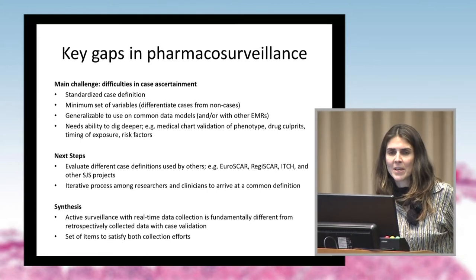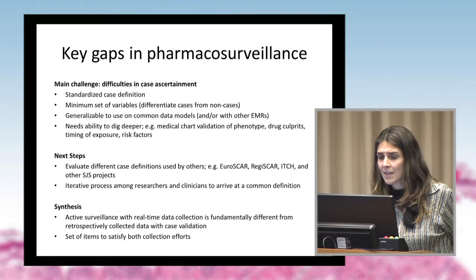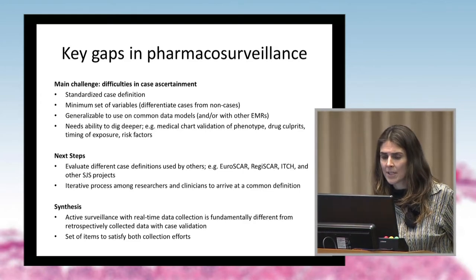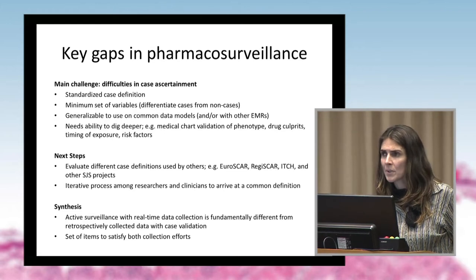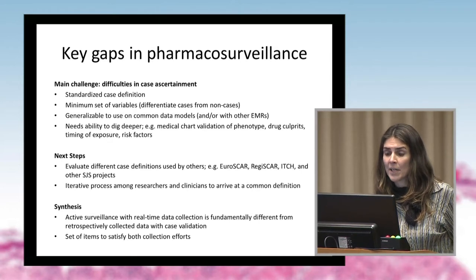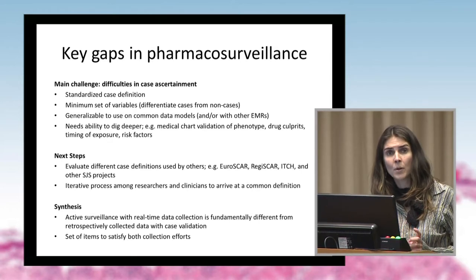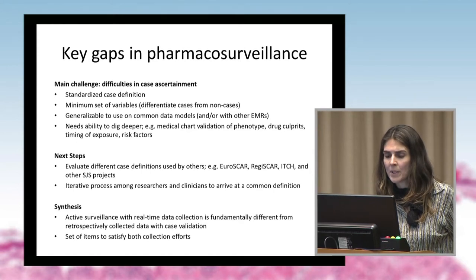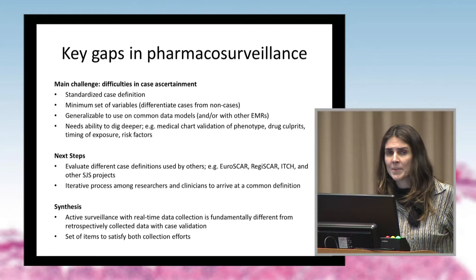By far, the main challenge we discussed was difficulties in case ascertainment, or identification of the phenotype. We thought we would need standard case definitions, and a minimum set of variables that could differentiate cases from non-cases. It would also be helpful to have that be generalizable to common data models so we can use large data.